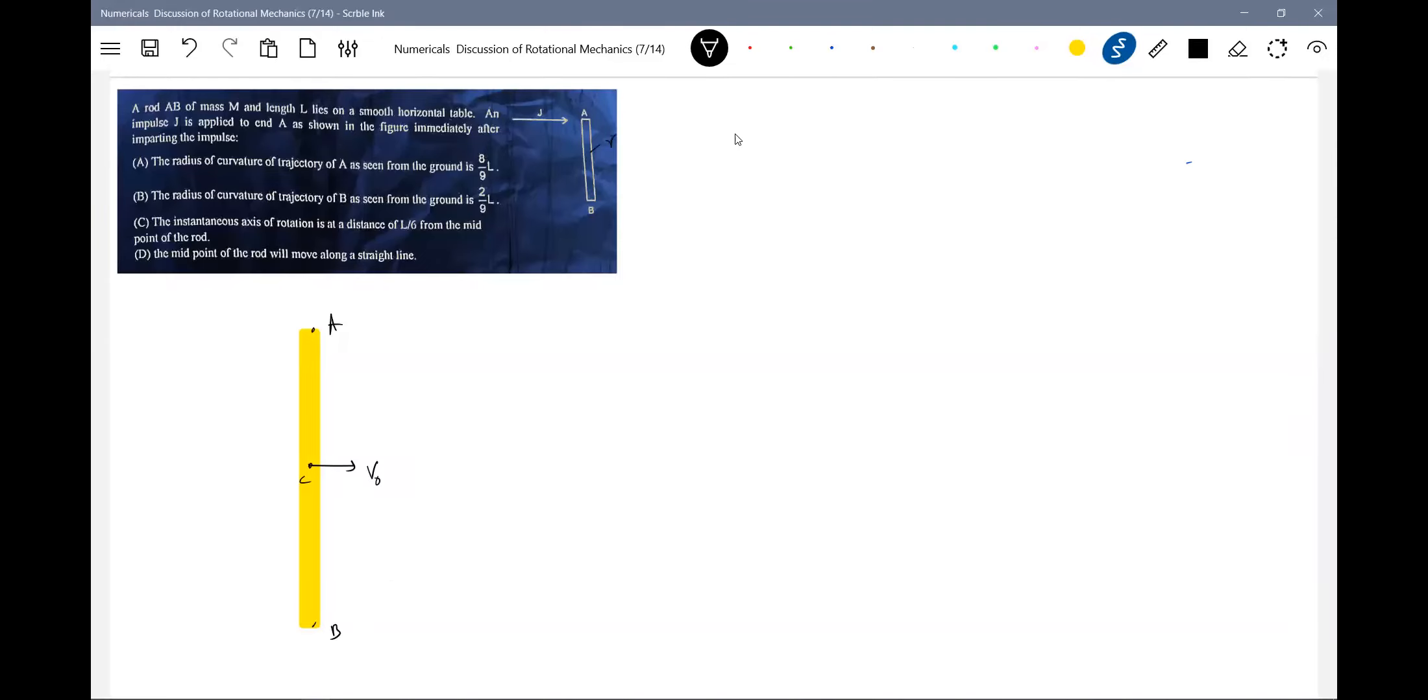Just after impulse it starts moving. So what is J? J is equal to mv_not. Then there'll be an angular impulse: J into l by 2. And about what point will the rod rotate? About center of mass. Because it's set free to rotate, it will rotate about its own center.